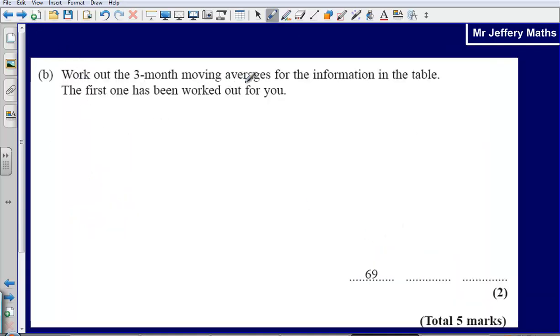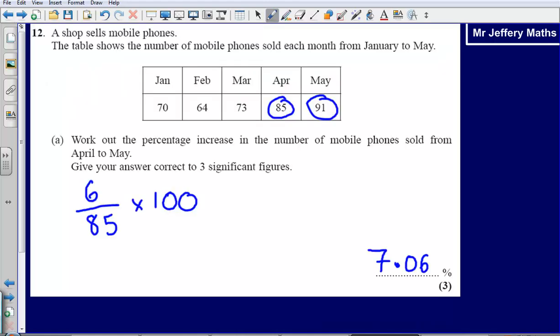Part B, work out the three month moving averages for the information in the table. The first one has been worked out for you. A moving average is simply calculating the amount for the first three months. Then we would work out the next three months average, so February, March, April.